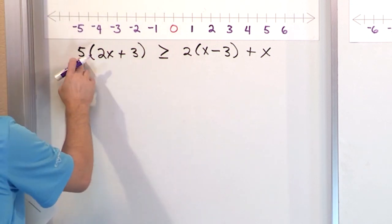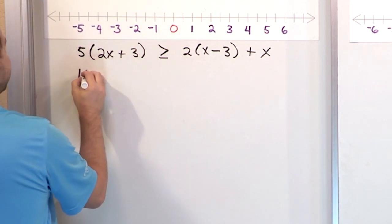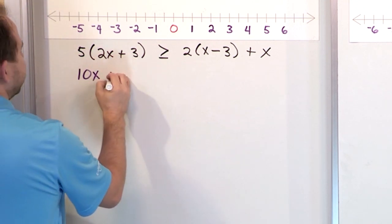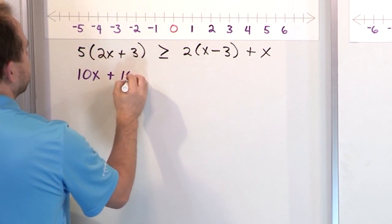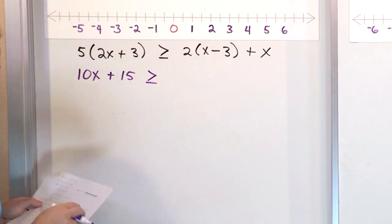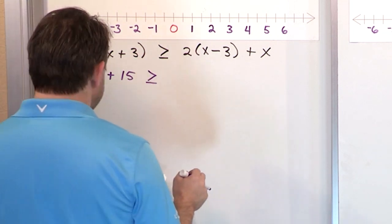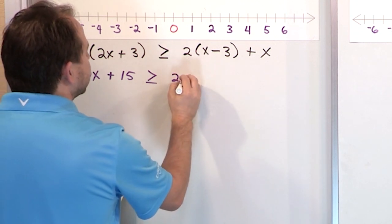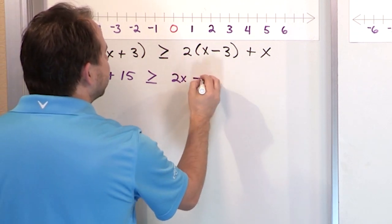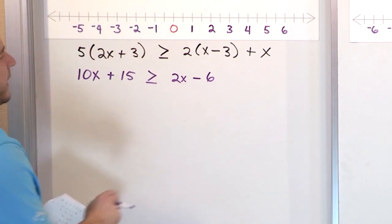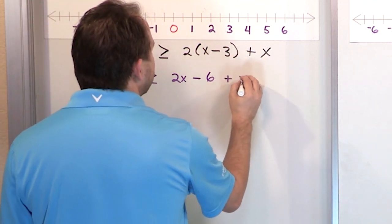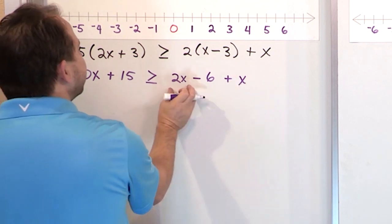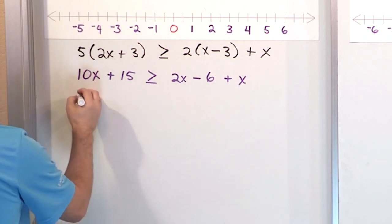Over here, 5 times 2x is 10x, and x comes along for the ride. 5 times positive 3 is 15, and then we have this inequality greater than or equal to. On the right, 2 times x is 2x, 2 times negative 3 makes negative 6, and then the plus x is just hanging out. Now because we've done all the distribution, we can combine those x terms.